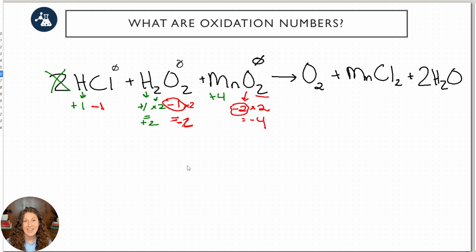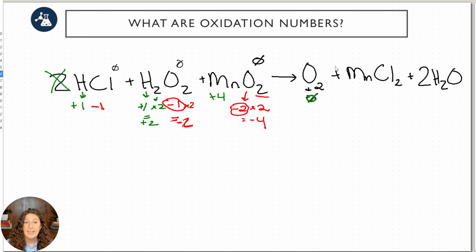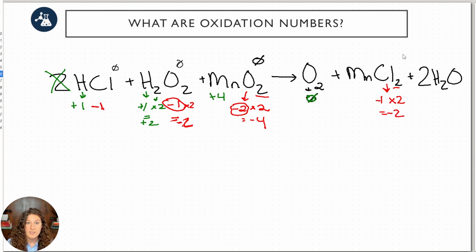Now let's move to the products and see which atoms changed. Elemental oxygen — by Rule 1 — always has an oxidation number of zero, regardless of subscript. For manganese chloride, we can't assign manganese directly, so we start with chlorine: negative one, times two (subscript), gives negative two. For the molecule to be neutral, manganese must be plus two.